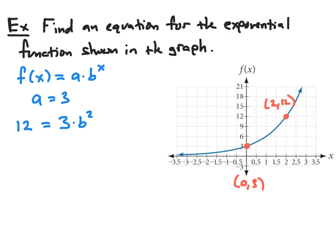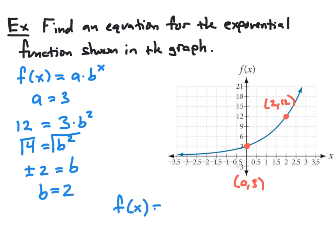Substituting the point (2, 12) into our equation: 12 = 3·b^2. Dividing both sides by 3 gives b^2 = 4. Taking the square root of both sides gives b = ±2. Because we're dealing with an exponential function, the base b must be positive, so b = 2. We now have a = 3 and b = 2, so our function is f(x) = 3·2^x, and this is the equation for the graph shown.